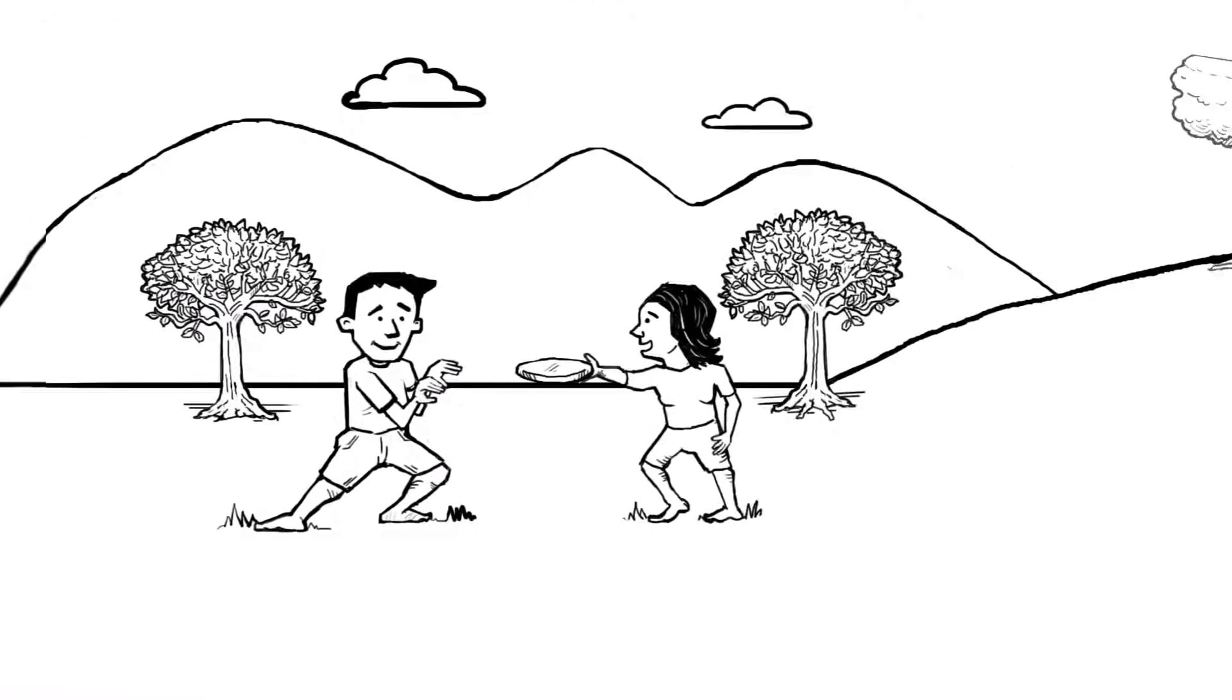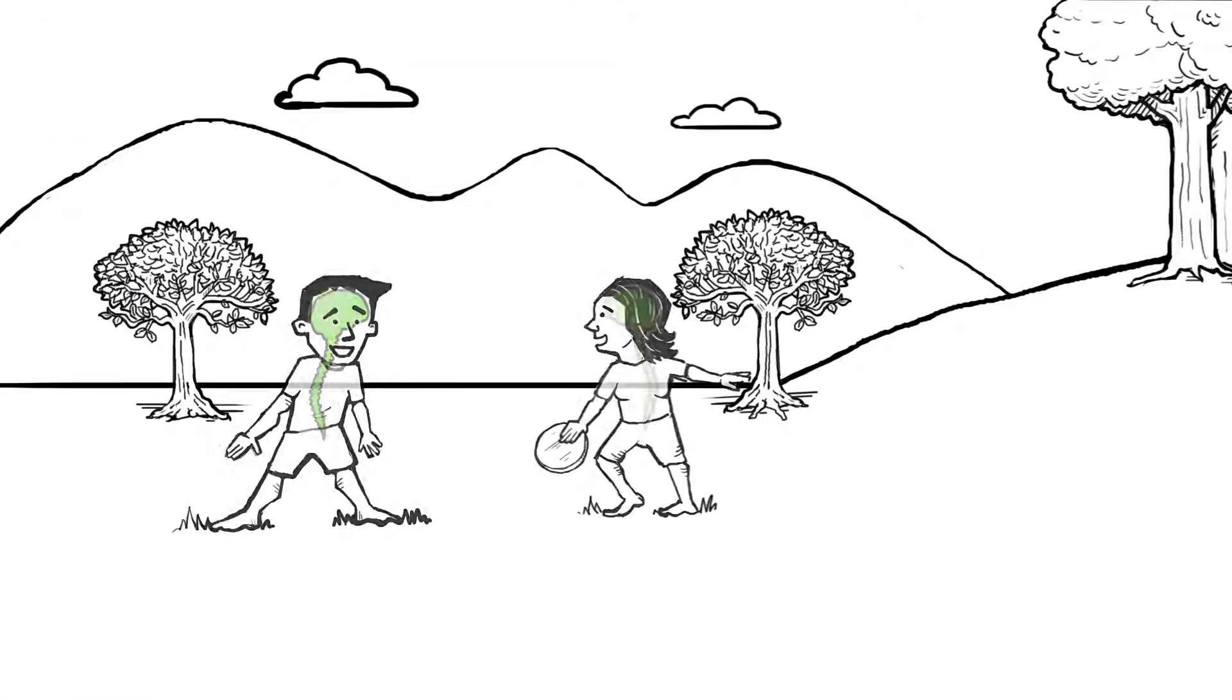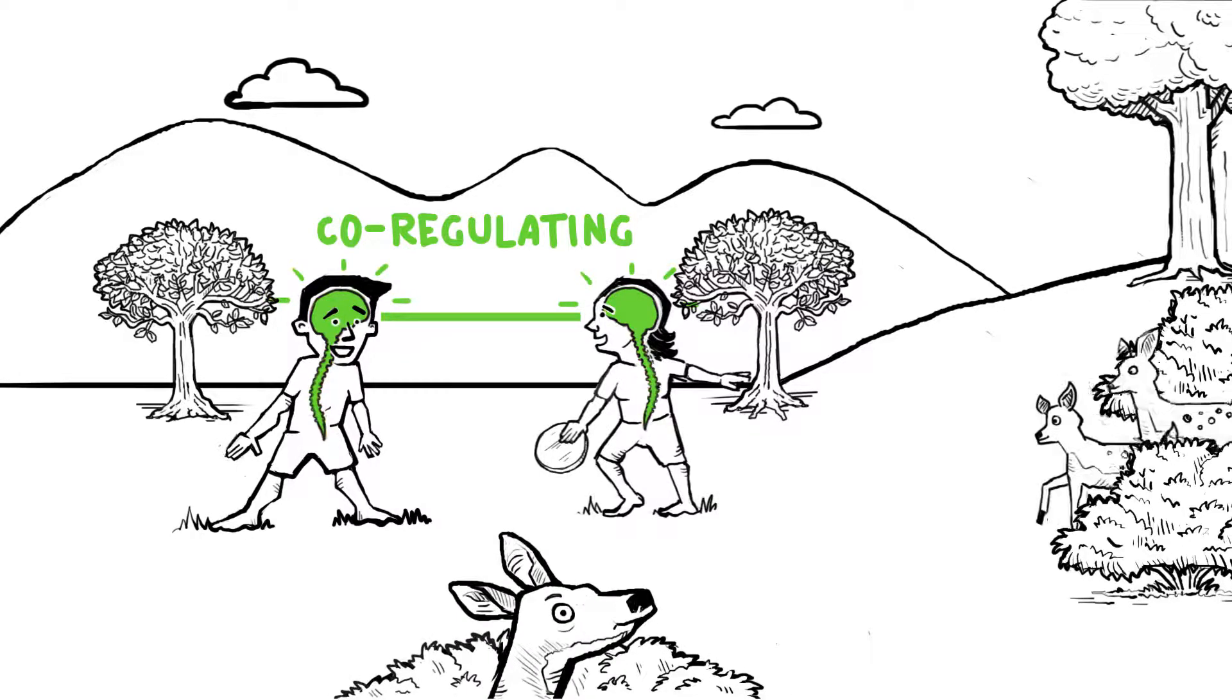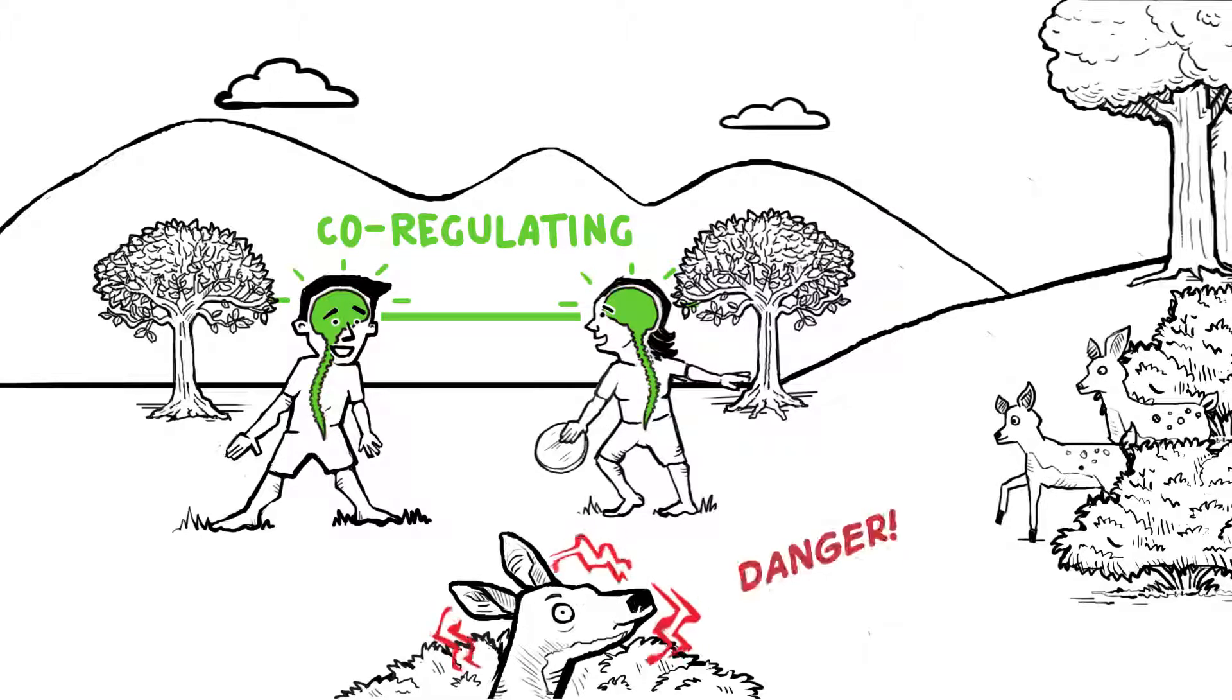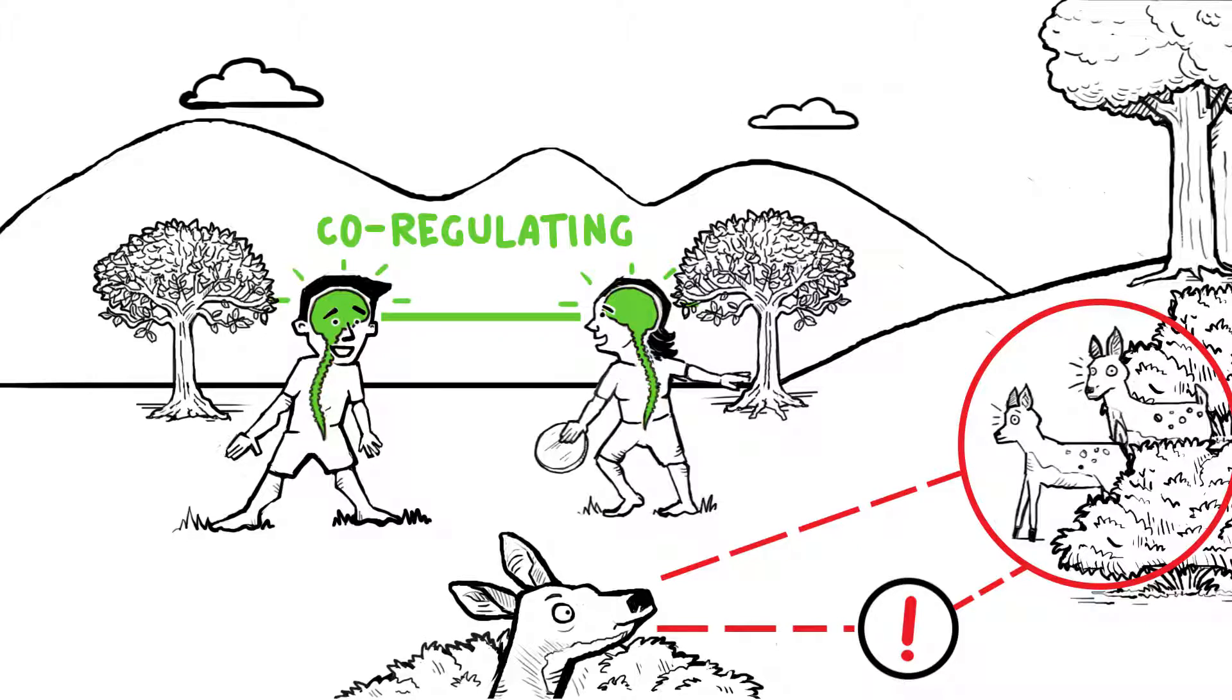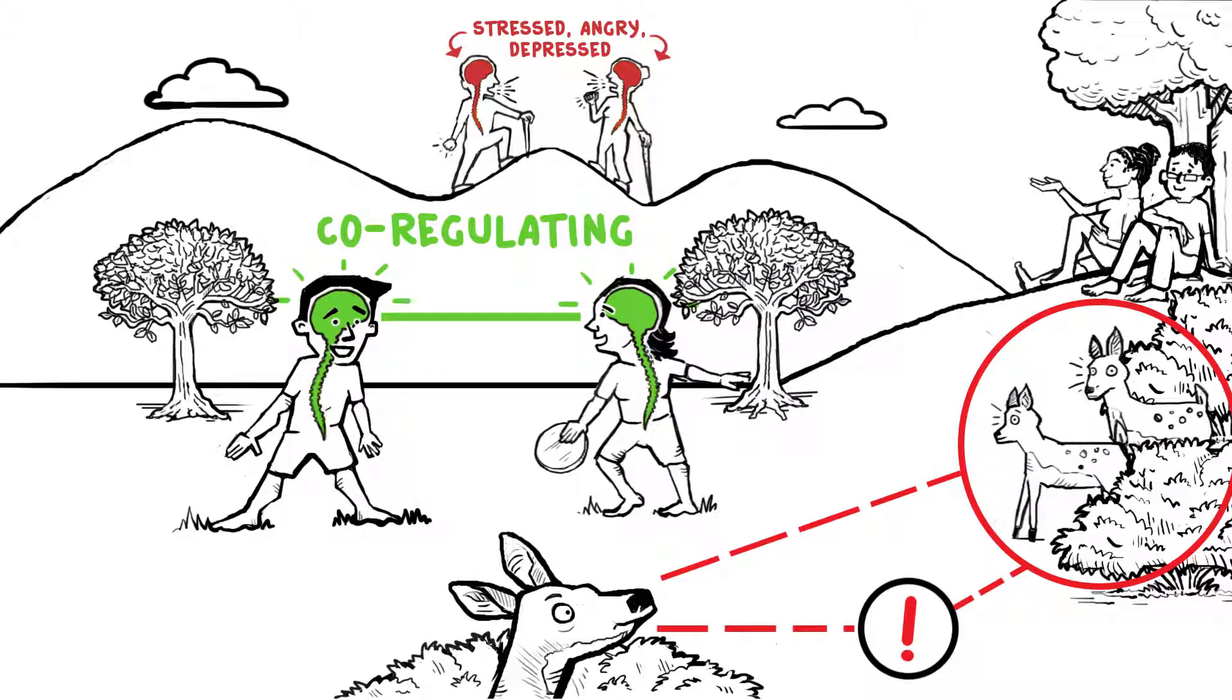Each one of us has an ANS, and our ANS is constantly communicating with and attuning to the states of others. We autonomically mirror the states of those around us. This is called co-regulating. We see it in herd behavior. If one animal senses danger, the entire group becomes more alert, increasing their chances of survival. We're exactly the same. When we're with others who are stressed, angry, or depressed, it makes us feel worse. When we're with others who are calm and happy, it makes us feel better.